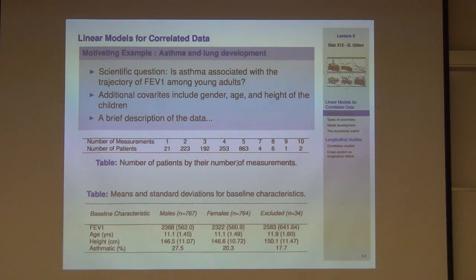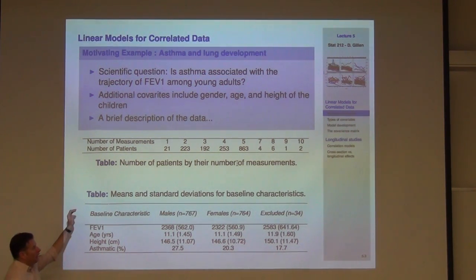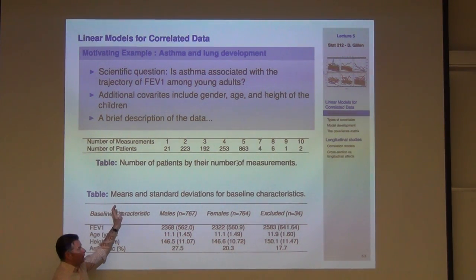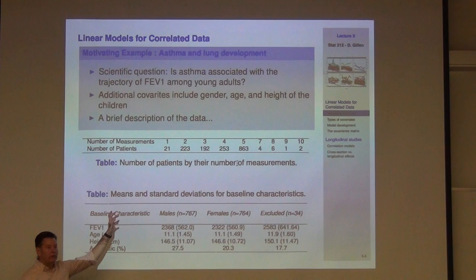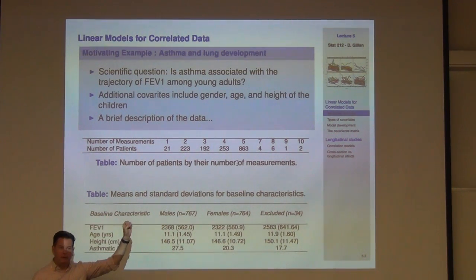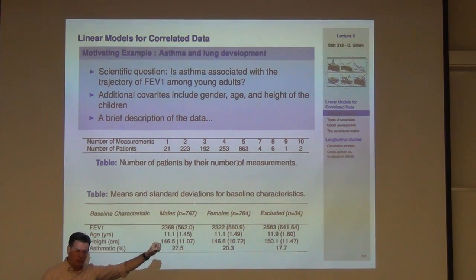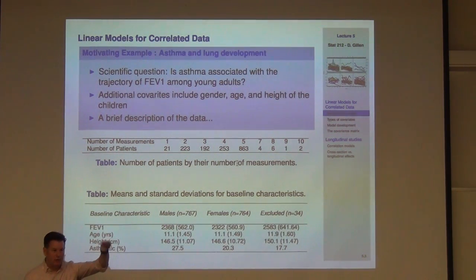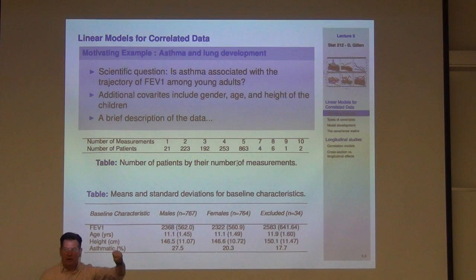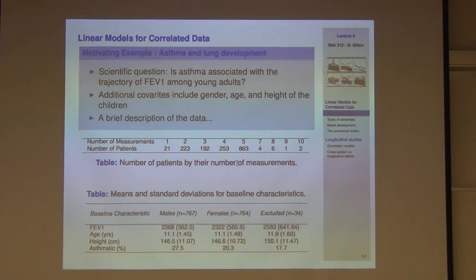One thing to say about this particular design is that I would call it an unbalanced design — meaning there are different numbers of measurements on each child. It's not balanced in the sense of having the exact same number of measurements on each kid.